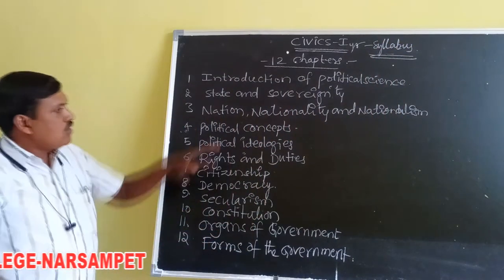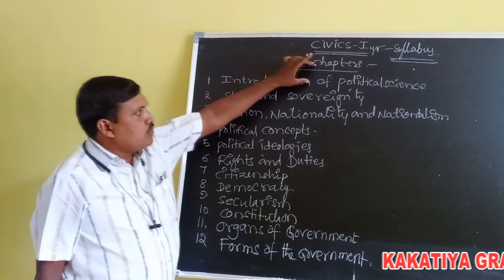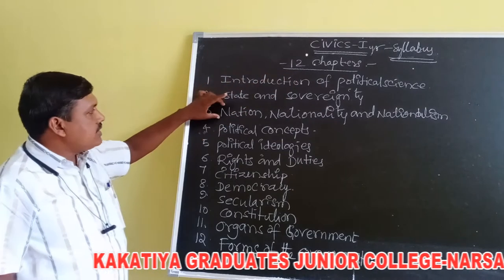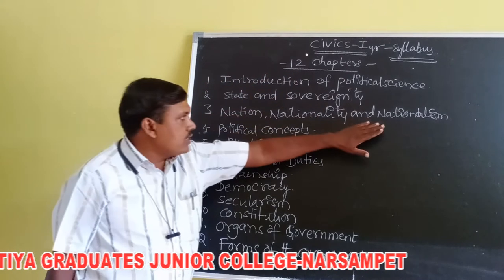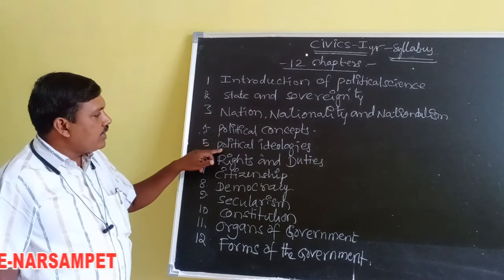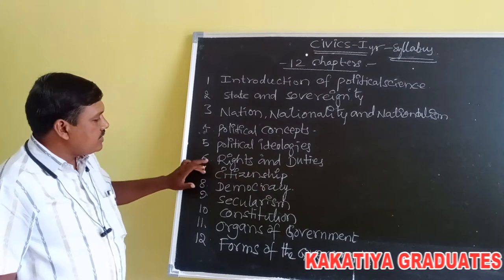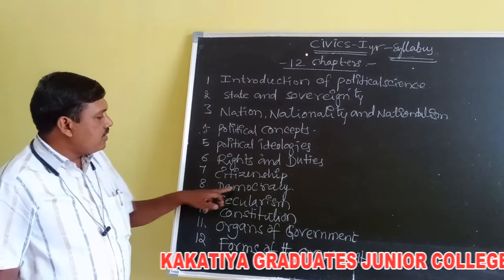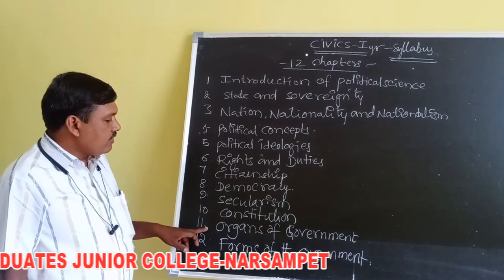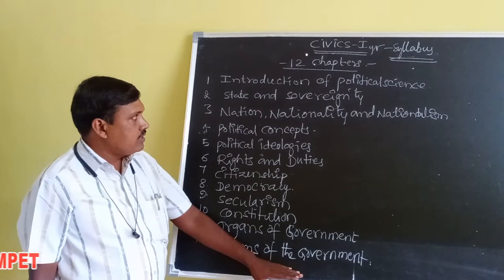So these are the 12 chapters in the first year series: Introduction to Political Science, State and Sovereignty, Nation, Nationality and Nationalism, Political Concepts, Political Ideologies, Rights and Duties, Citizenship, Democracy, Secularism, Constitution, Organs of Government, and Forms of Government.